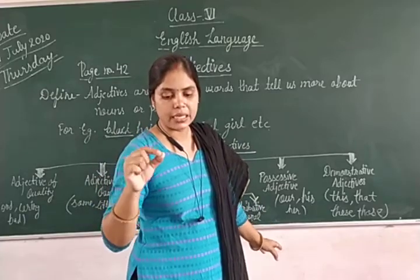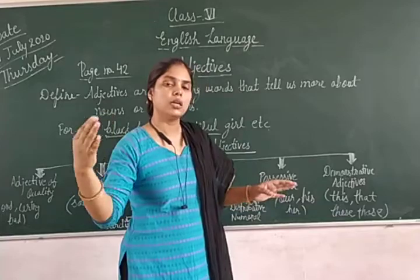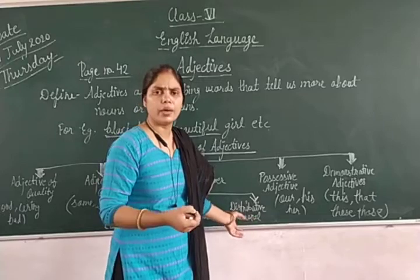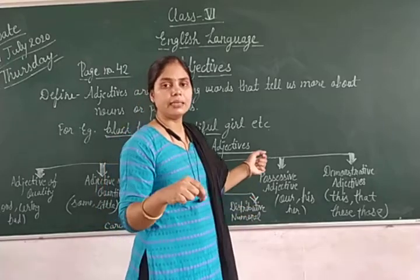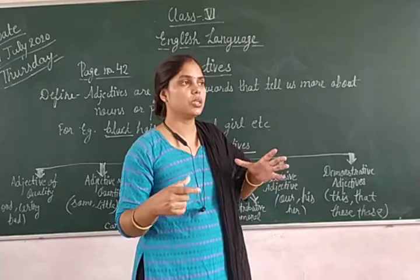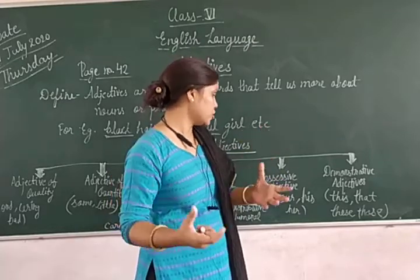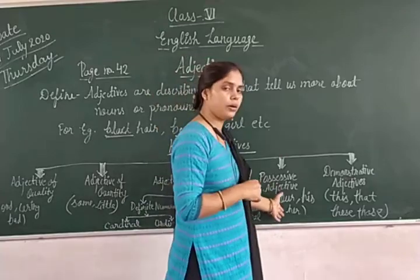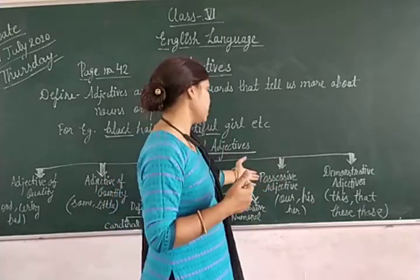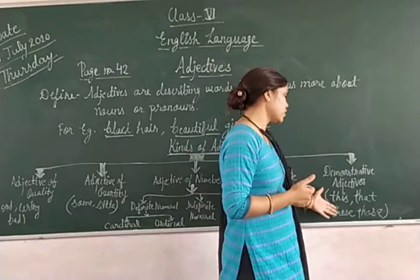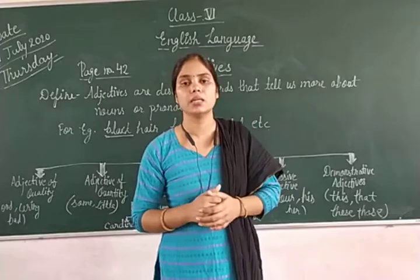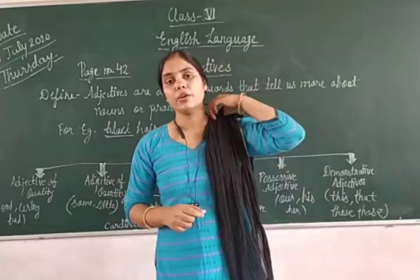Distributive numeral shows each one of the noun — each day, every day, every boy, each girl, either, neither. Possessive adjective shows possession or ownership. Demonstrative adjectives are this, that, these, those — which we use to point out and demonstrate something.